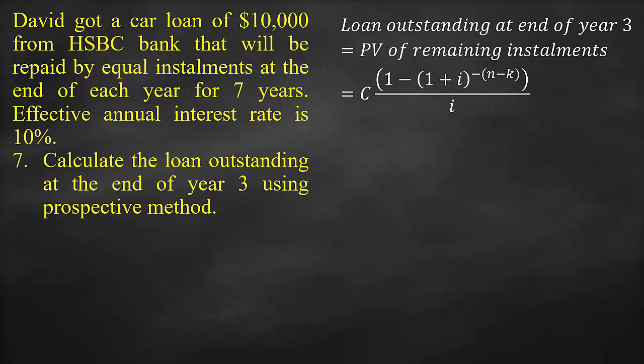The formula for the present value of the remaining unpaid installments equals the periodic installments multiplied by [1 minus (1 + interest rate) to the power of negative (total number of periods minus number of paid periods)], all divided by the interest rate.